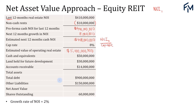We then compute total assets by taking the value of the operating real estate, plus cash and equivalents, plus land held for future development, plus accounts receivable — giving us 5.194 billion dollars. Note that intangible assets are excluded here. Subtracting total debt and other liabilities from total assets gives us 4.144 billion dollars.